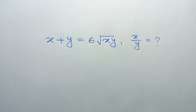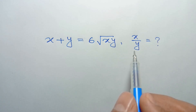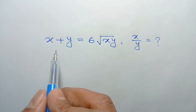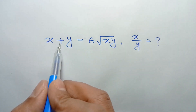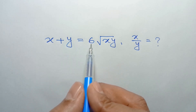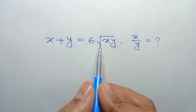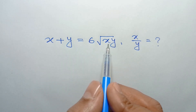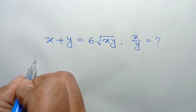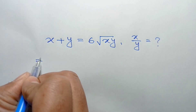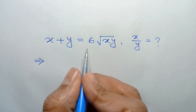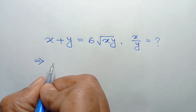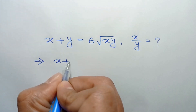Hi everyone. In this video I am going to show how to find the value of x over y, where x plus y is equal to 6 square root of xy. Taking the square of both sides, we can write x plus y whole square is equal to 6 square root of xy whole square.